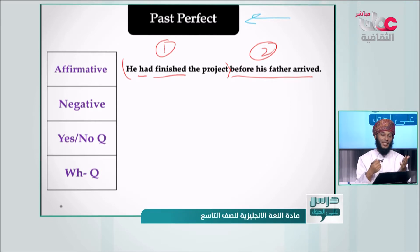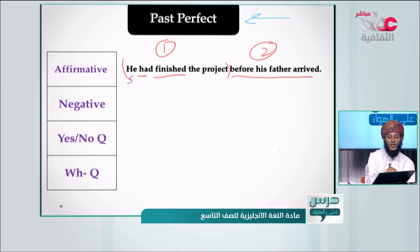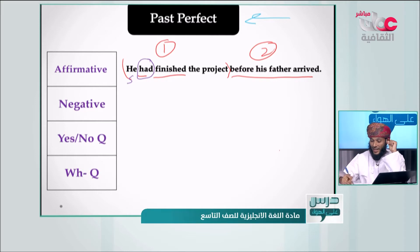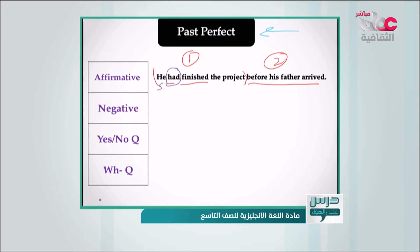To form a sentence using the past perfect: first, mention the subject. After the subject, the word 'had' — used with all subjects. After 'had,' we must have the past participle of the verb. Remember: after 'have,' 'has,' and 'had,' we always use the past participle — the third form of the verb.